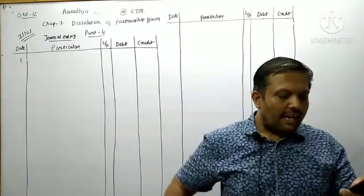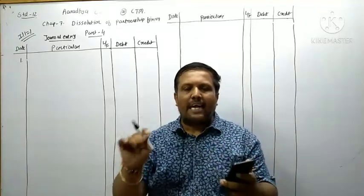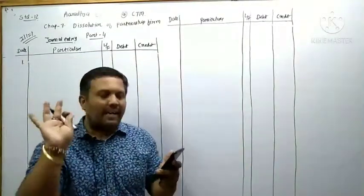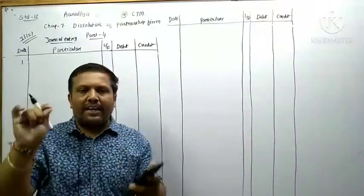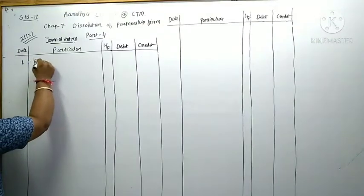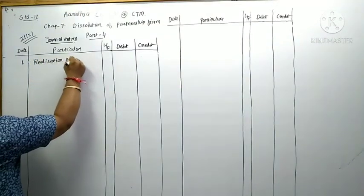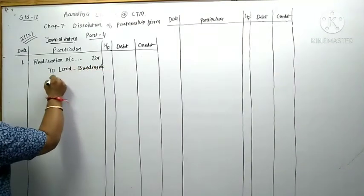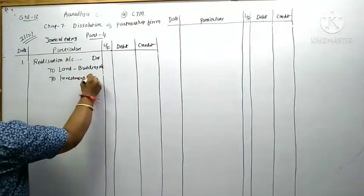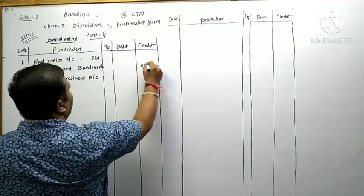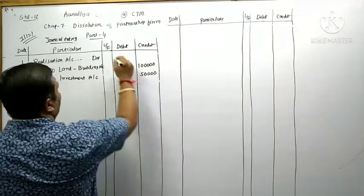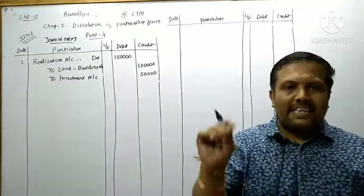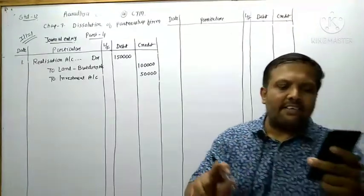Transaction 1: Land and Building rupees 1 lakh, and Investment 50,000 are disclosed in the balance sheet at the time of dissolution. The first entry is the book value entry. Realization Account debited - to Land and Building Account 1 lakh, and to Investment Account 50,000. Both together, total assets come to 1 lakh 50 thousand rupees.